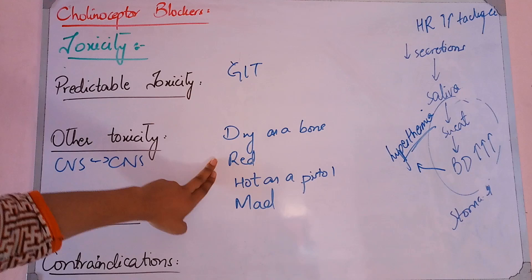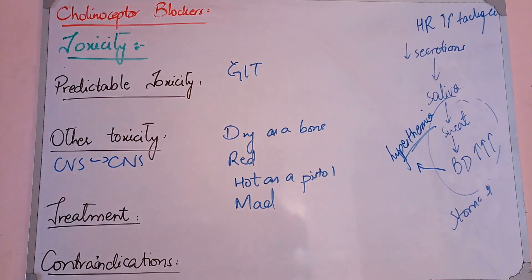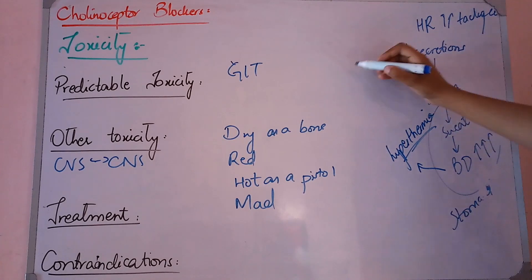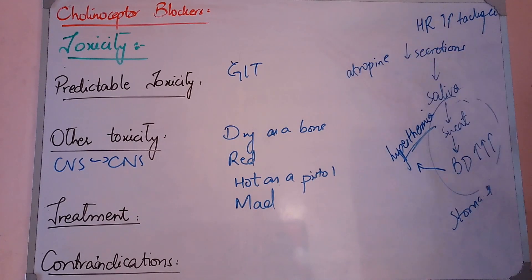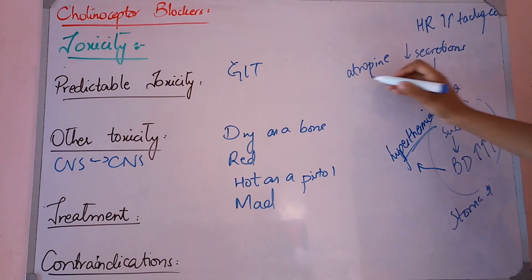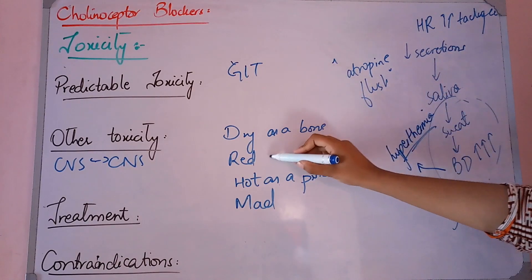Red as a beet means that when you take a large amount of drugs like atropine in overdose, the cutaneous skin vessels dilate excessively. When the skin vessels dilate, blood flows in excess to the skin. The patient will appear red, not sweating, with dilated skin vessels. This is called atropine flush, and the patient will be Red as a beet.